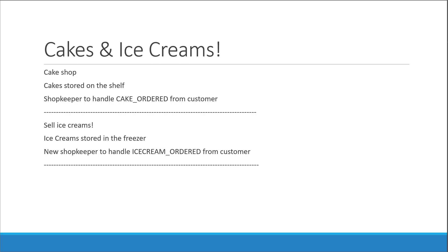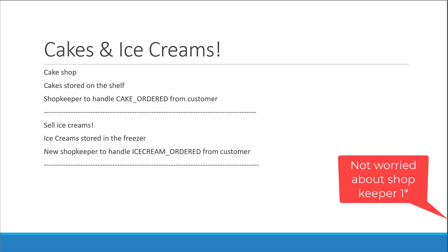One is solely responsible for cakes and one is solely responsible for ice creams. When a customer comes in and places an order for a cake, shopkeeper one handles the request. He or she is only worried about the cakes on the shelf and is not bothered about shopkeeper two. When a customer comes in and places an order for an ice cream, shopkeeper two handles it. He or she is only worried about the ice creams in the freezer.